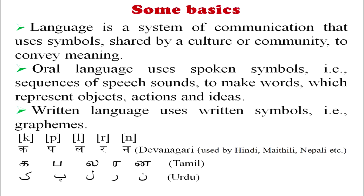Oral languages use spoken symbols like sounds, consonants and vowels produced by human organs. Written language uses graphemes — the letters of the alphabet. For example, the sounds ka, pa, la, ra, na are represented in Devanagari, and the same sounds are represented by different graphemes in Tamil and Urdu.